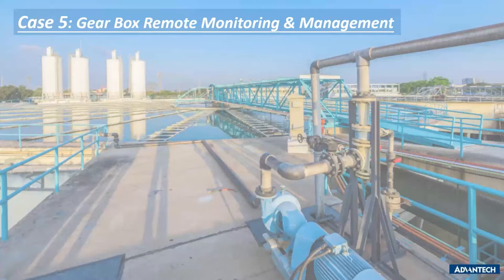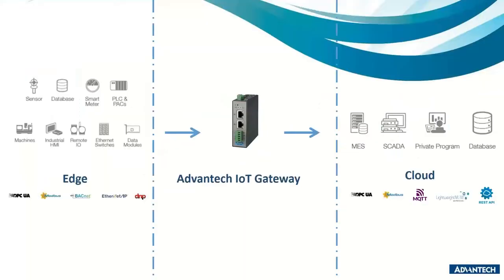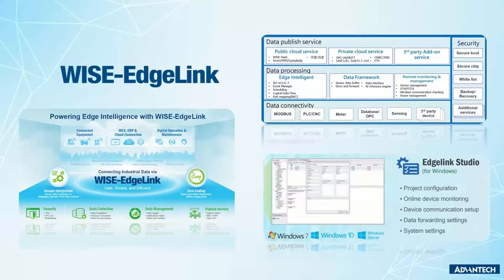To avoid gearbox breakdowns that could bring operations down, the customer needed to ensure priority awareness. We proposed our IoT gateway along with our RTD IoT module to collect gearbox bearing and oil temperature data, and push it to the customer's Azure cloud for monitoring. Advantech's IoT gateway conveniently connects edge devices and clouds seamlessly. To complement this, Advantech developed a simple, easy-to-use software called WISE-Link. I'll pass to my colleague Zol to share more details on how it works with the gateway.